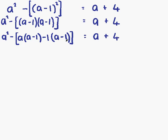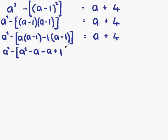The purpose of the squared brackets is to allow us to solve this complicated part first. So we have a squared and our minus sign outside the squared bracket. Inside: a times a is a squared; a times minus 1 is minus a; minus 1 times a is minus a; and minus 1 times minus 1 is positive 1. Then we close our squared bracket, equal to a plus 4.